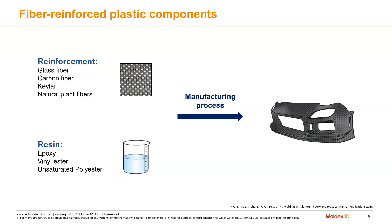RTM products are composed of reinforcement and resin. Reinforcement usually gets higher mechanical strength. Some common reinforcements include glass fiber, carbon fiber, Kevlar, and natural plane fibers. For commonly used resins, there are epoxy, vinyl ester, unsaturated polyester, and so on.